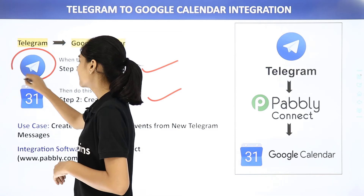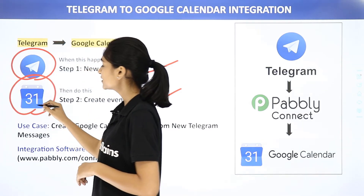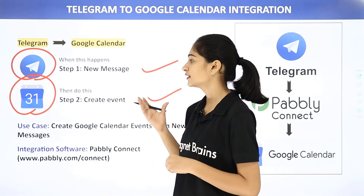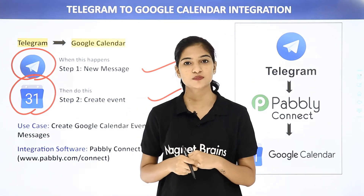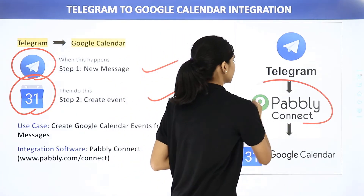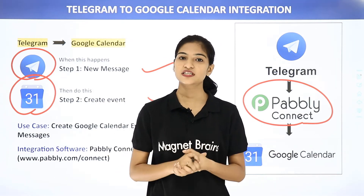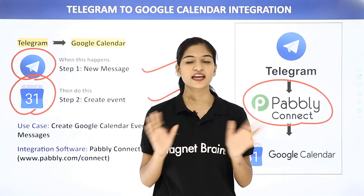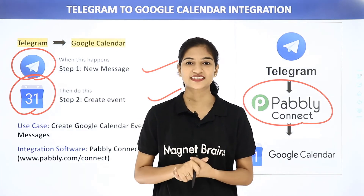Telegram is a messaging app whereas Google Calendar helps you to schedule your appointments, meetings and events. The problem here is Telegram and Google Calendar don't have any integration between them, and that is why we are going to use Pably Connect, a third-party application, to integrate both these software applications. The best part is you don't require any knowledge of coding. So let me show you this on my screen.